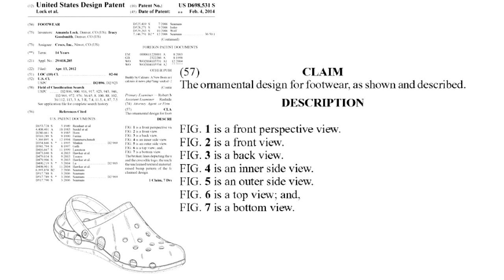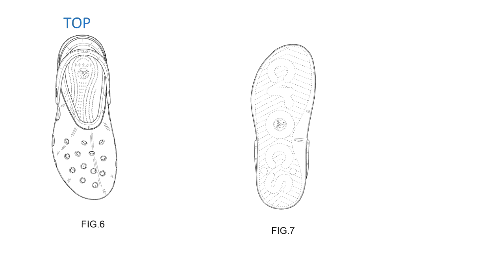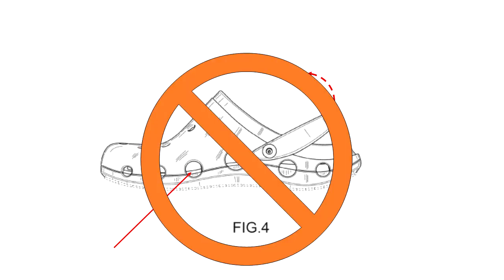There are typically seven figures in a design patent: a perspective view, two side views, front and back, and top and bottom. Here are some of the views: we have the perspective, the front, the back, the side, the other side, and the top and the bottom. These popular shoes have some unique features such as the distinctive vent holes and a movable strap to let the shoe be worn as a clog or sandal — but none of these details matter for a design patent.